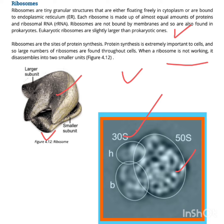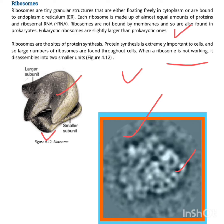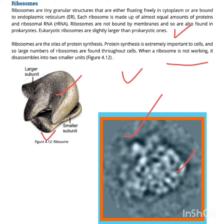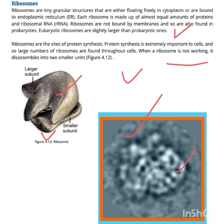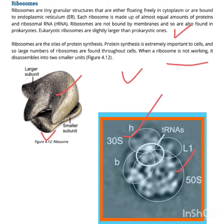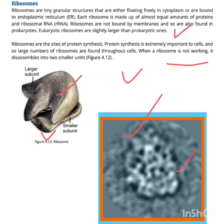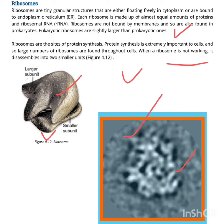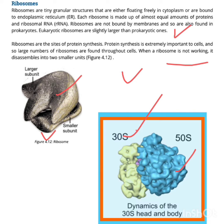They are small organelles but they are very important as they undergo the process of translation. Ribosomes help in making protein synthesis.